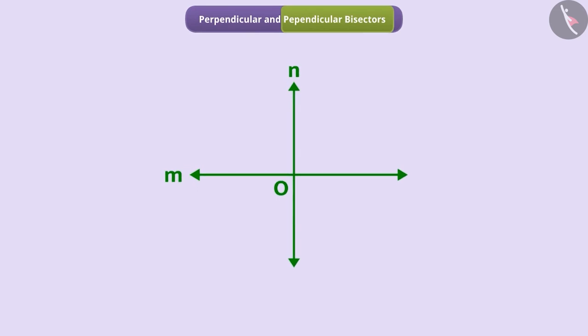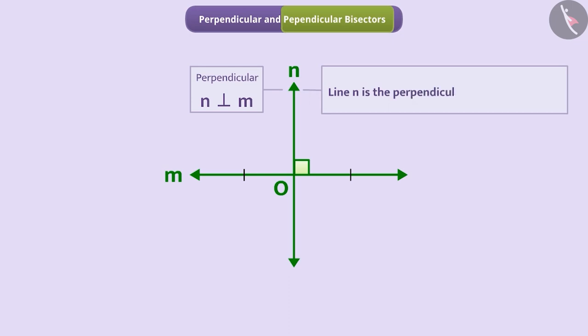Now see here. Line N is perpendicular to line M, but this line is dividing M into two equal parts. That is, the perpendicular line N passes through the midpoint of the line M. We can say that the line N is the perpendicular bisector of the line M.